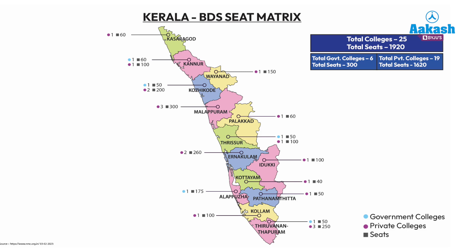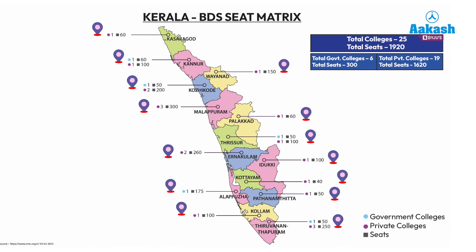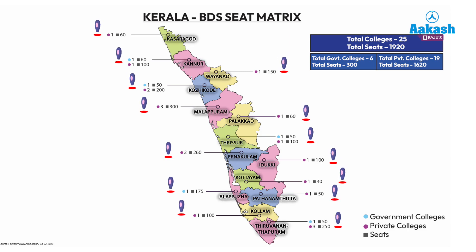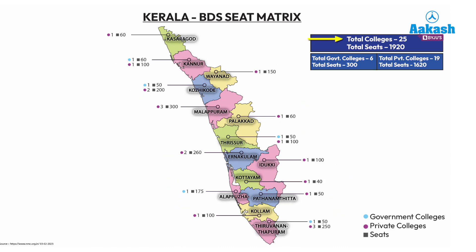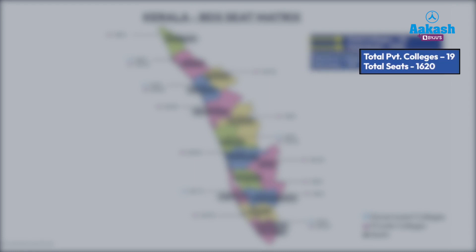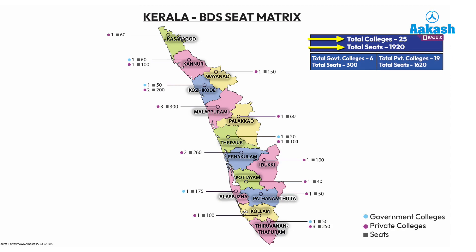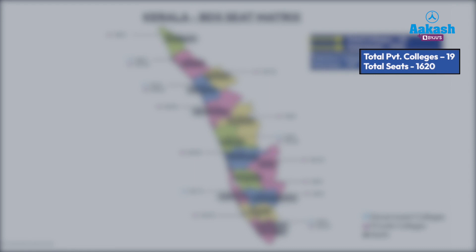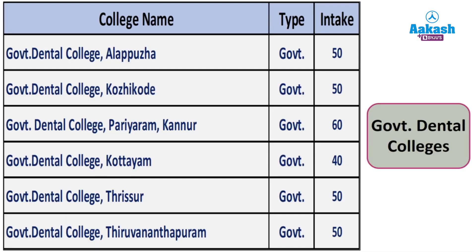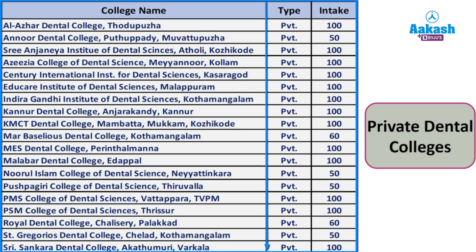The BDS seat matrix: the map on screen shows BDS colleges in your city and neighboring cities. The total number of BDS colleges in Kerala state is 25, with 1,920 seats available. Out of 25 BDS colleges, 6 are government colleges and 19 are private or self-finance institutions. For seat bifurcation: 300 seats are government seats and 1,620 are self-finance seats.